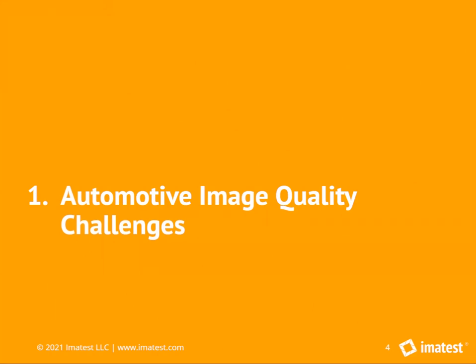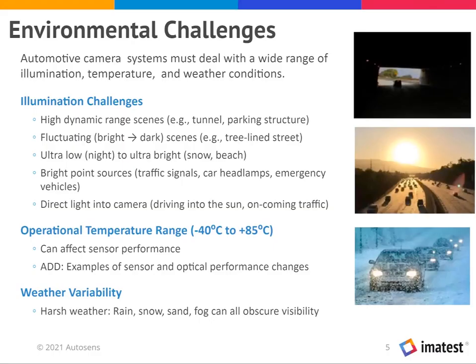We'll start with automotive image quality challenges. Cars operate in fairly extreme environments — a high range of illumination from very bright elements like the sun, headlights, and traffic signals, to very dark scenes. High dynamic range is a major challenge. There's also a range of temperatures from very cold to very hot, which can affect sensor performance. Weather events such as rain, snow, sand, and fog can also obscure the camera and reduce visibility.